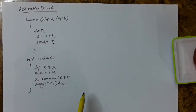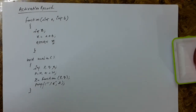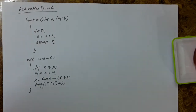Whenever you call a function, in the runtime, an activation record is prepared in the RAM. When you compile and execute a program and you pass some values to the function, an activation record is prepared. You can say that for every function call, an activation record is prepared. This activation record is stored in the memory or the RAM.